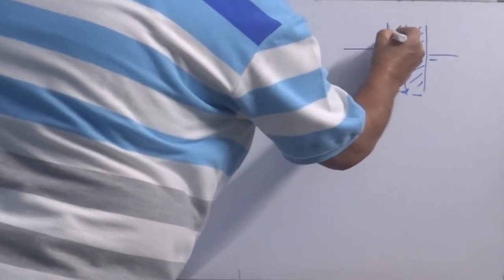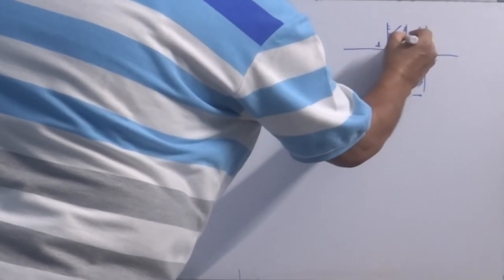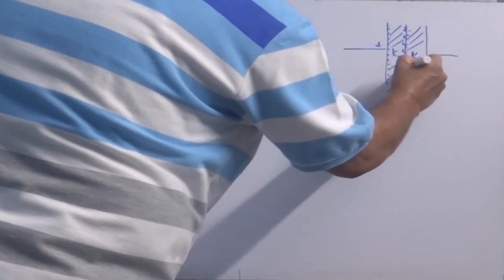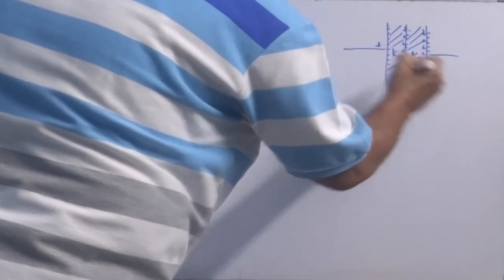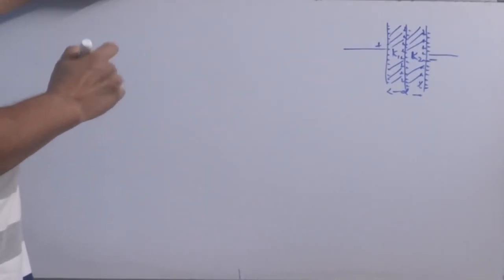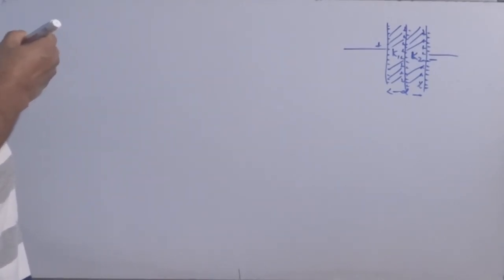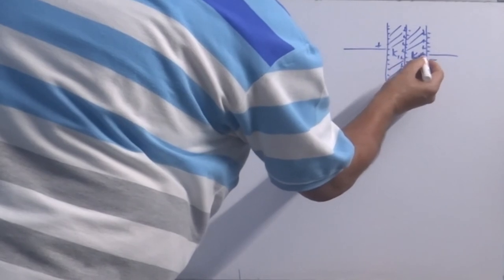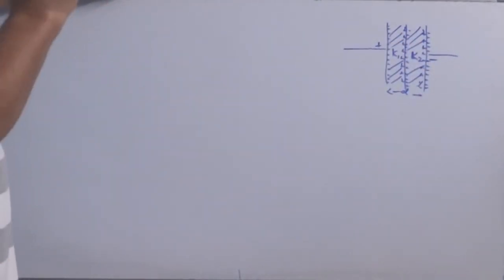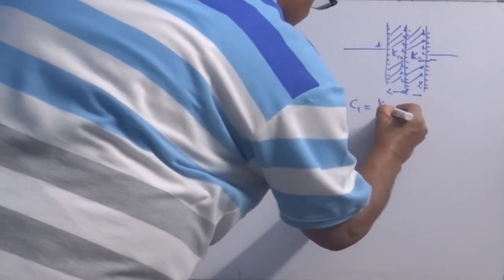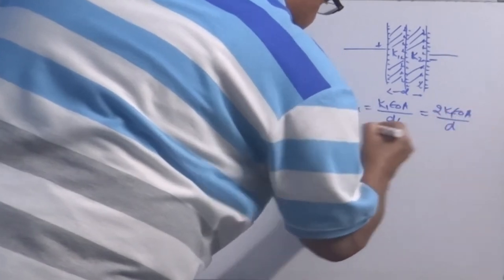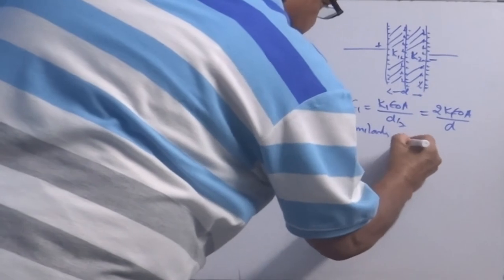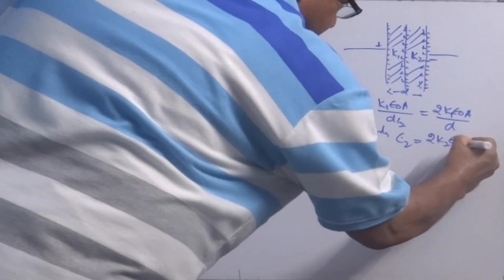The positive plate induces negative charge on the K1 dielectric surface on that side, positive on the other side of K1, negative on K2's near side, and positive on K2's far side. You can consider this as two capacitors. Since positive of one is connected to negative of the next, they are in series. C1 = 2K1ε₀A/D and C2 = 2K2ε₀A/D.